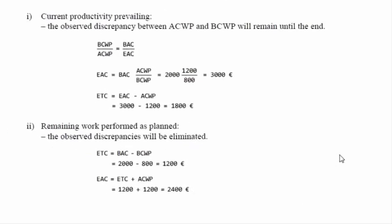Under the second hypothesis, we assume we can correct any problems of the first phase. The remaining work will be implemented as planned, so its cost will equal its budget amount. Therefore, ETC equals BAC minus BCWP, that is the total work less the work already performed. In this case we obtain 1200 euros. The EAC value is obtained by adding to this the actual cost of the work performed, leading to 2400 euros.